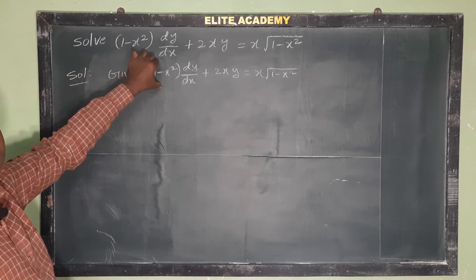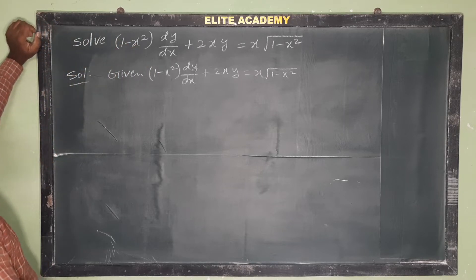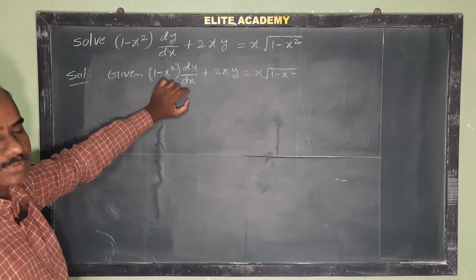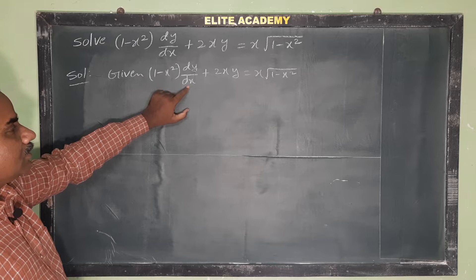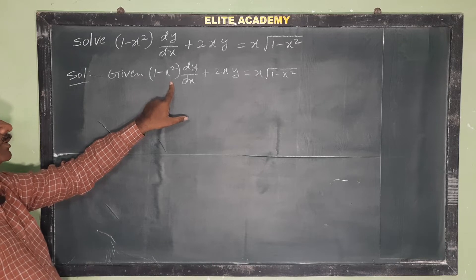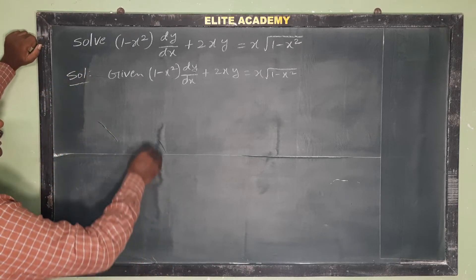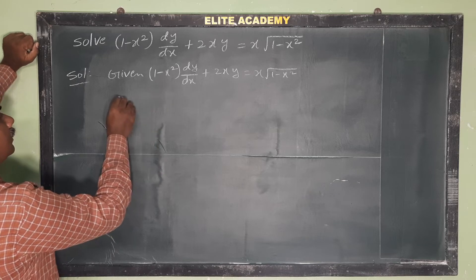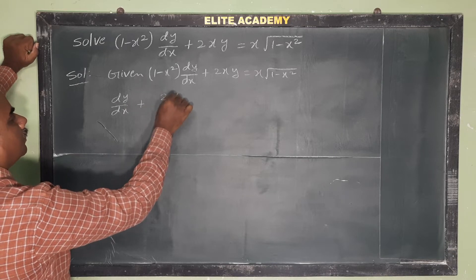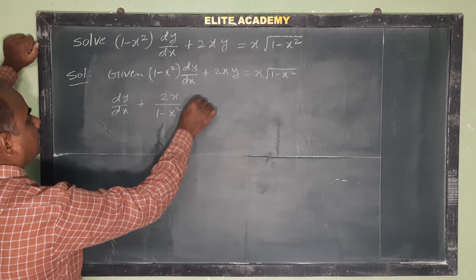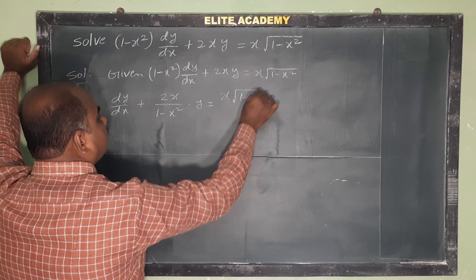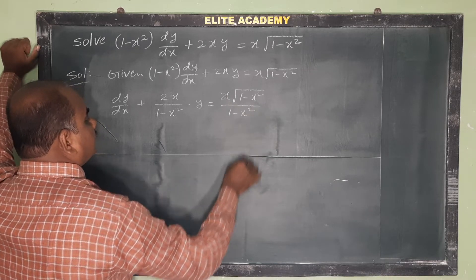Here it is not in general form. The general formula requires dy by dx to be single. So this is a linear differential equation in terms of y. Divide the entire equation with 1 minus x square. Our equation becomes dy by dx plus 2x by (1 minus x square) into y equals x into root of 1 minus x square by 1 minus x square.